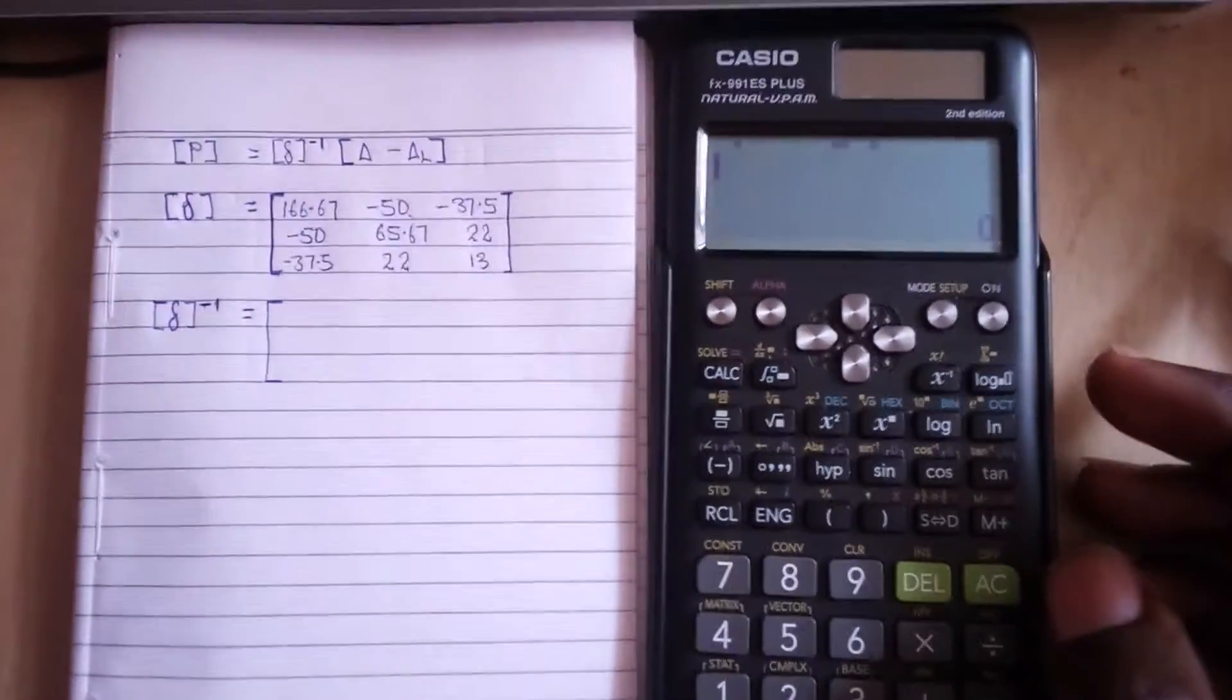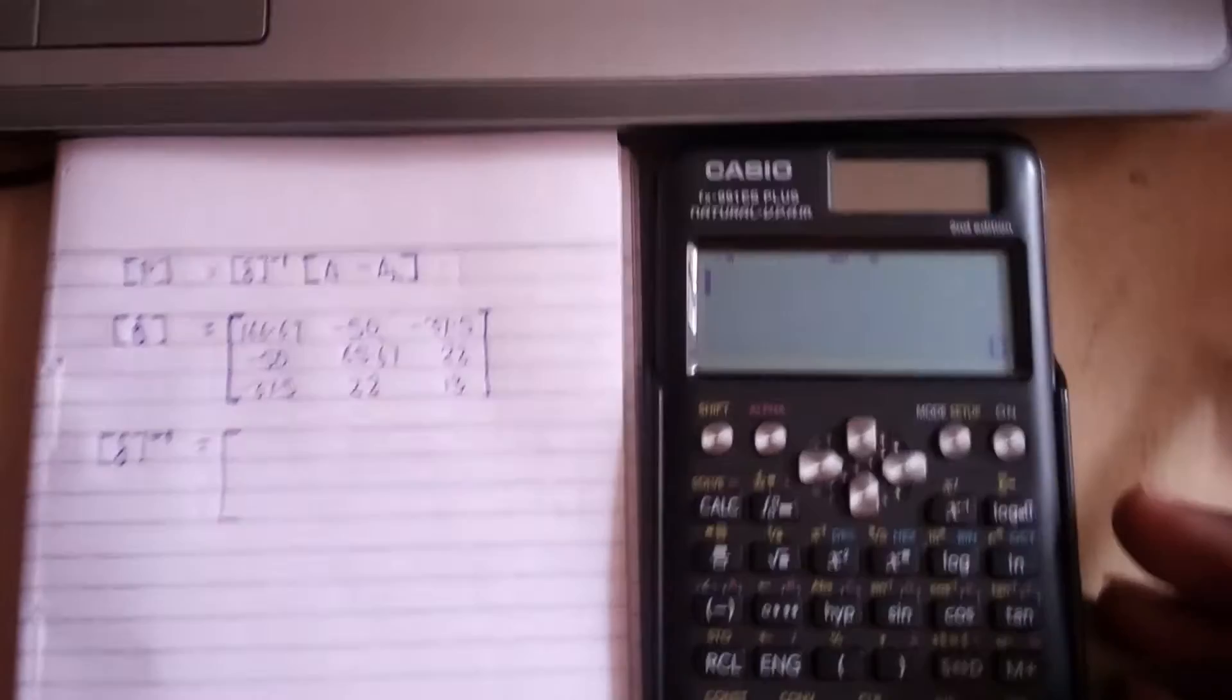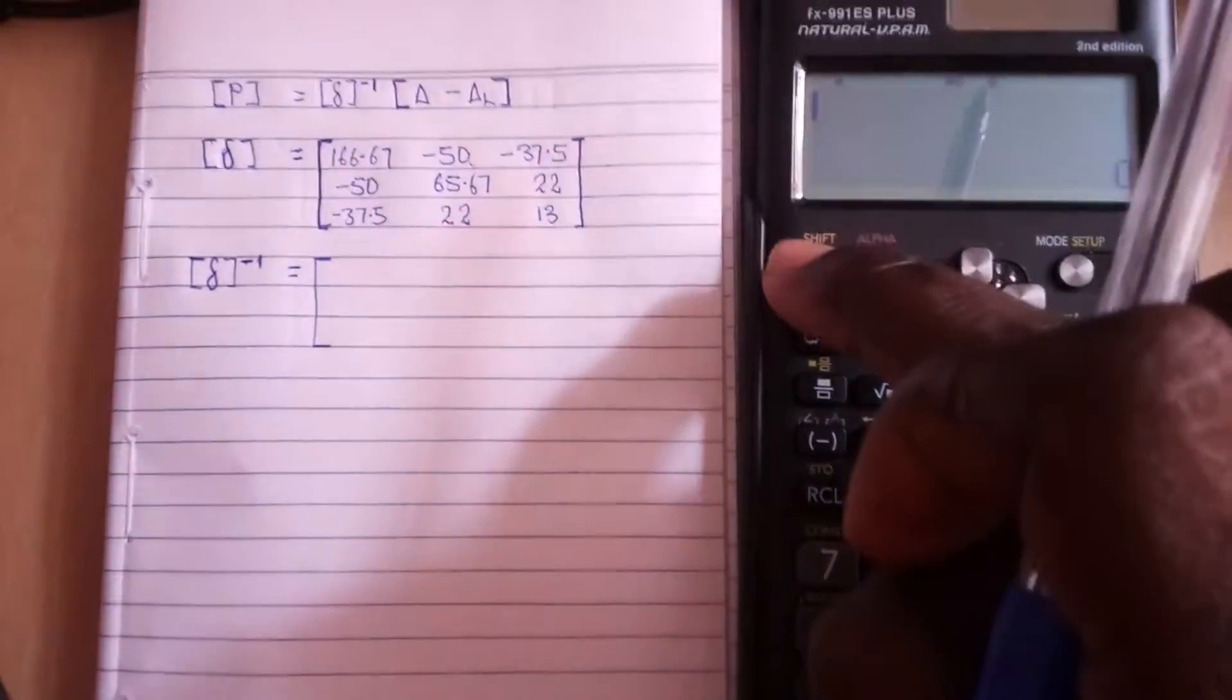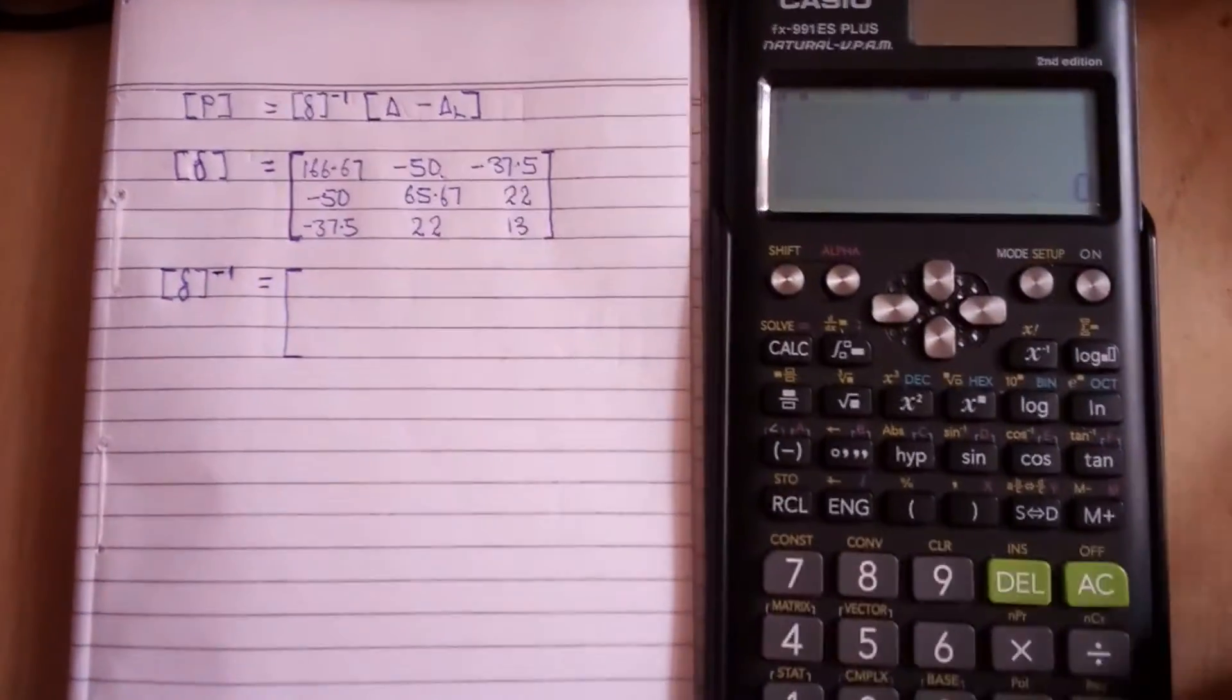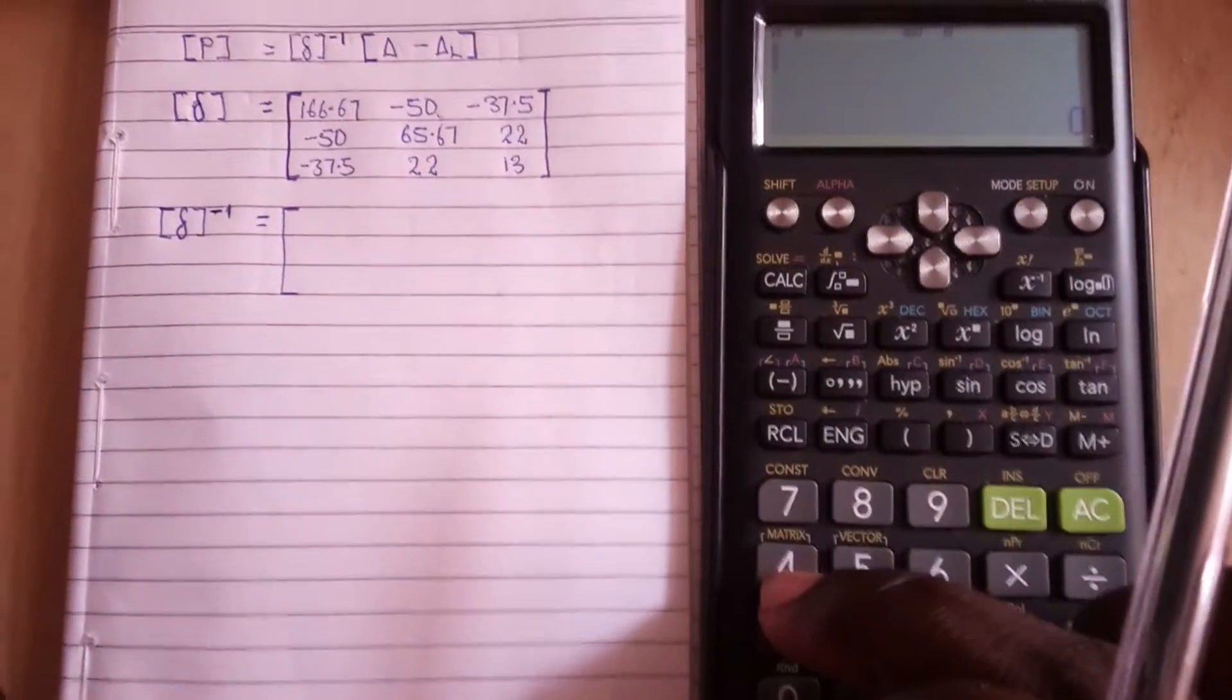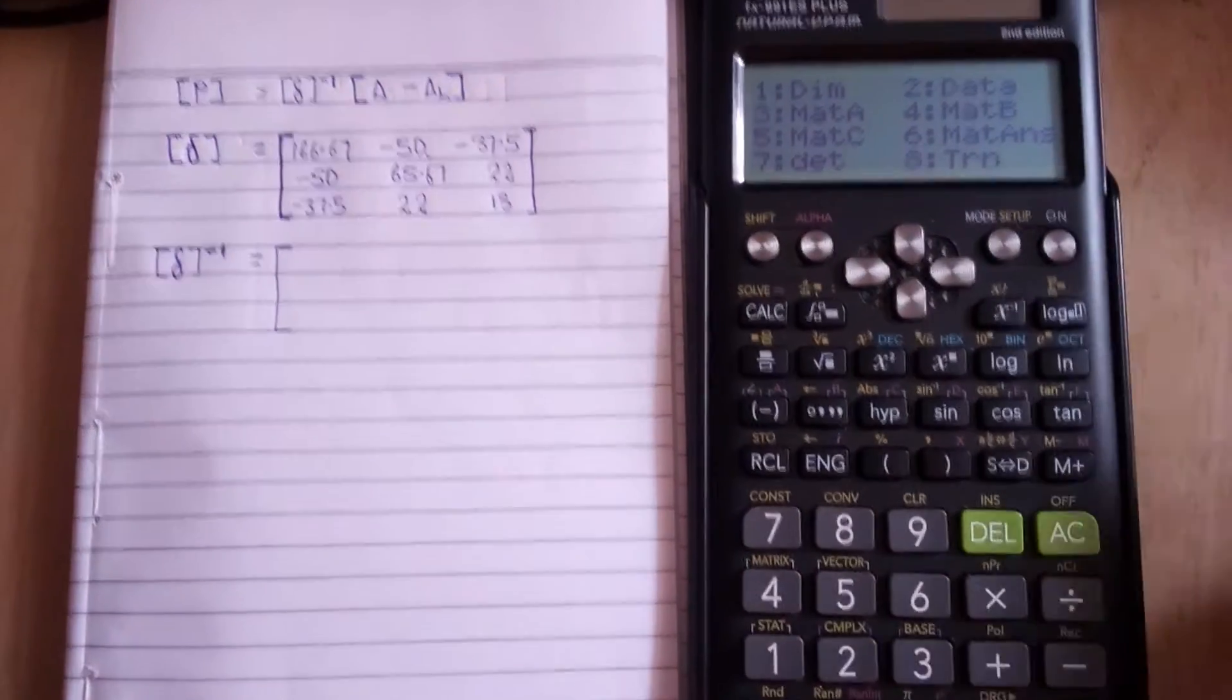Now we want to find inverse. You click on the shift button. When you click the shift button, you see where it's written matrix, that is button number 4. You click on that.